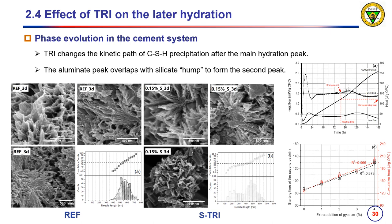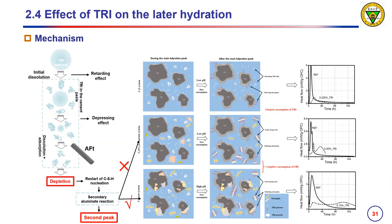Once TRI is consumed, C-S-H starts to nucleate and grow as normal. When adding more gypsum into cement, both the onset time and the corresponding heat release increase linearly. The onset time of the second peak overlaps with the onset time of the ettringite peak. The effect of TRI on late hydration is closely related to the chemical composition of the cementitious material. Formation of ettringite helps the adsorption of TRI polymer, takes it out of the solution, and allows new nucleation and growth of C-S-H.